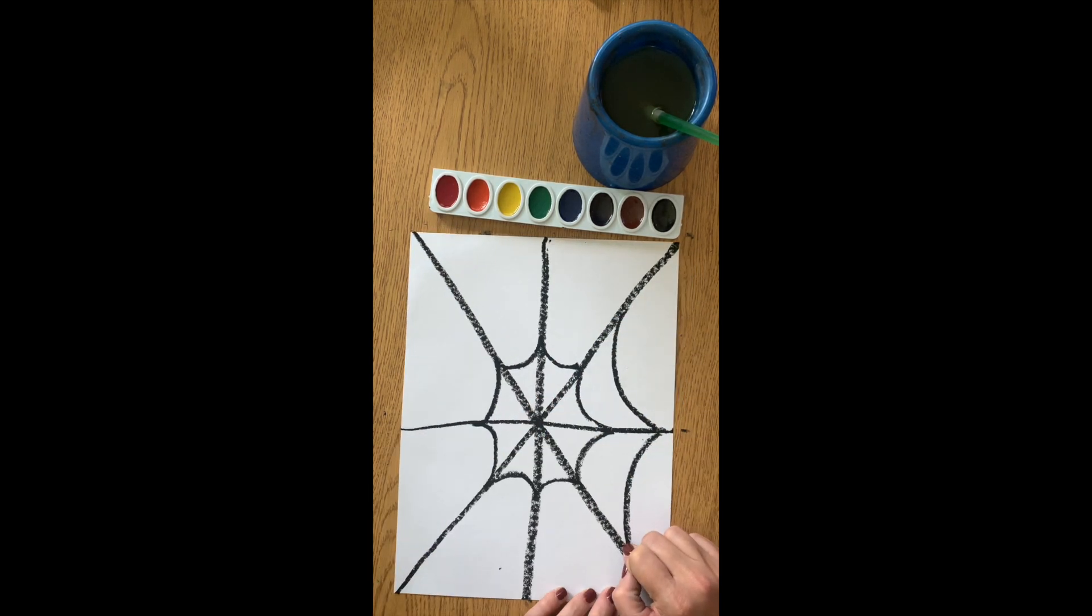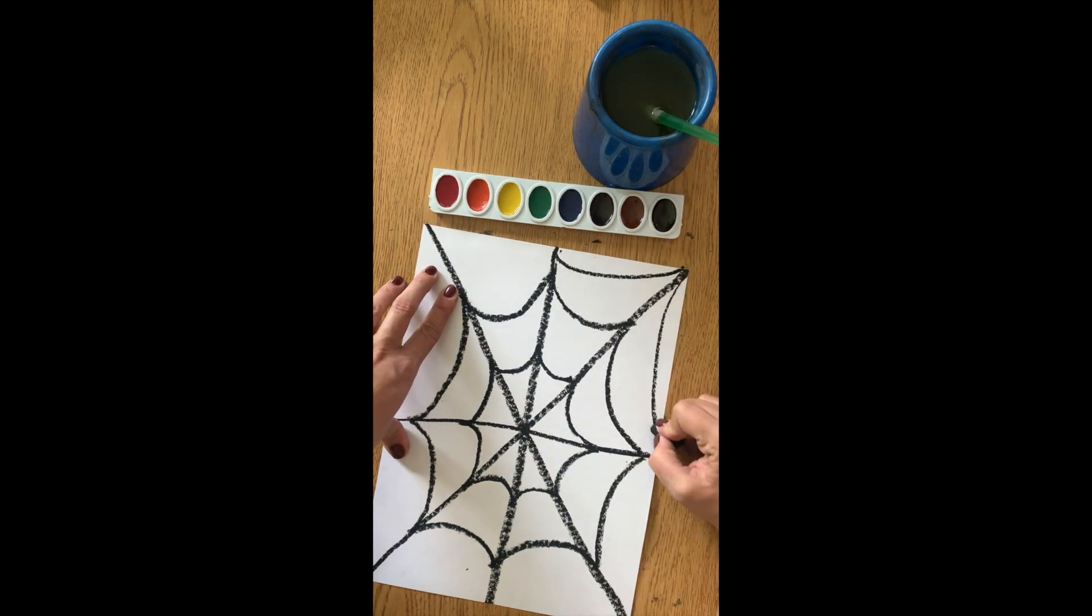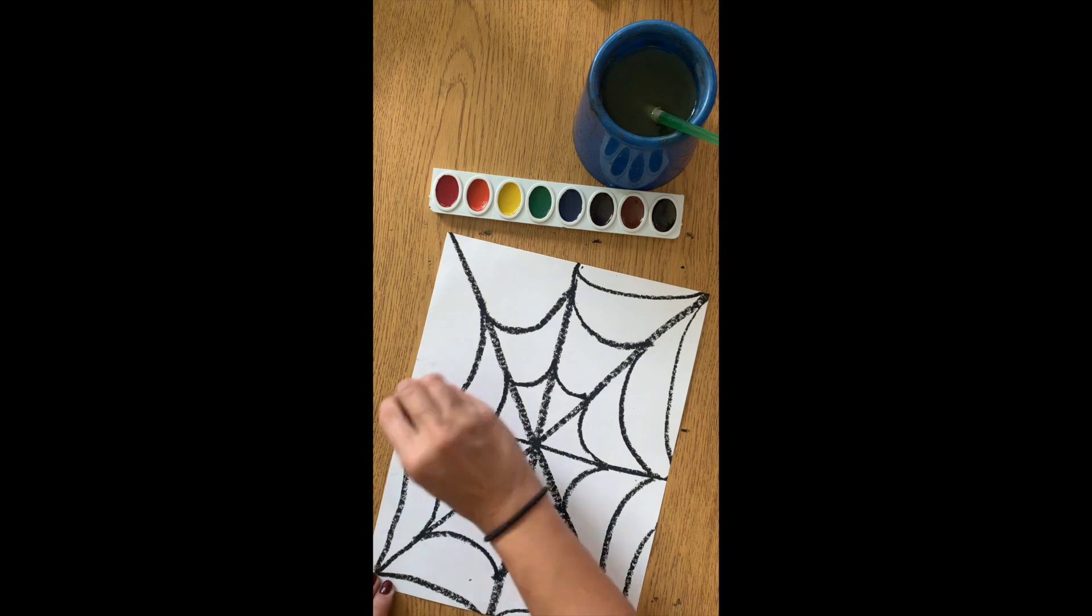Now you see me drawing the rest of my lines. Remember to do downward shapes so that it doesn't look like a flower, but it looks like a spider web.